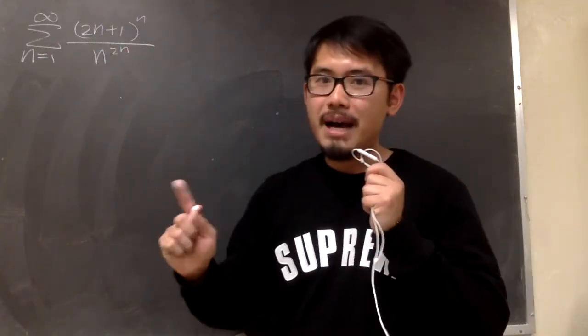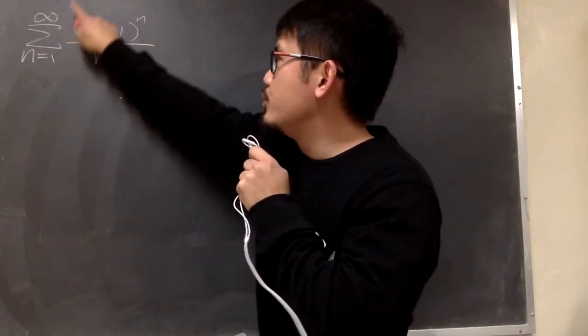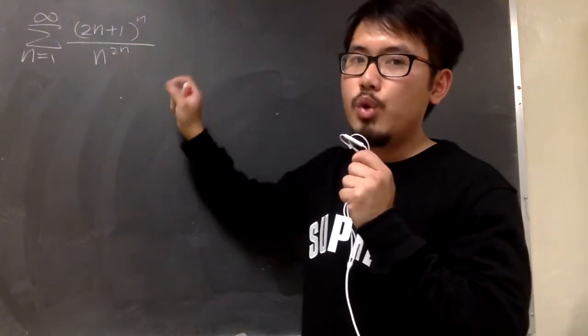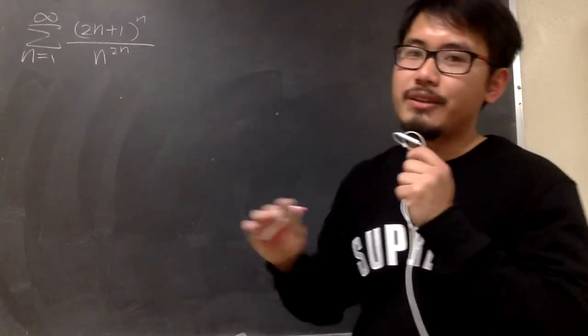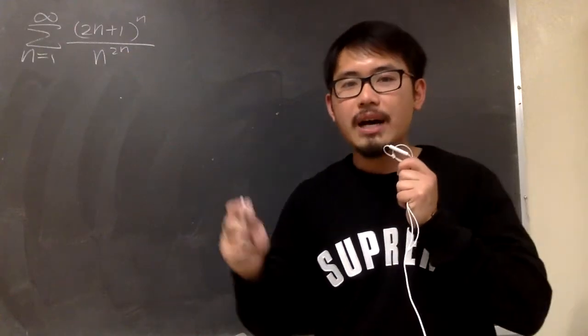The ratio test might work, but we know that if we take the nth root of this expression, we will be able to cancel the n in the exponent here and here, so that's very nice. And this is how the root test goes.